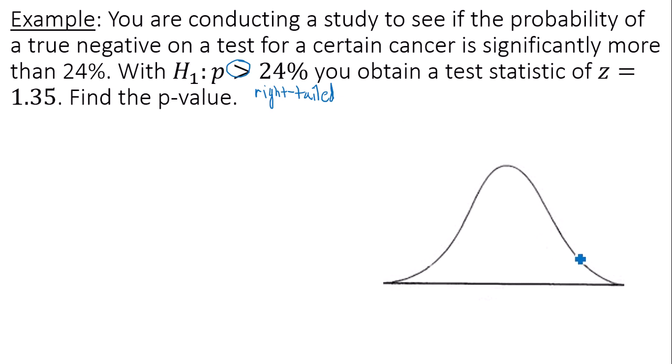So that means my p-value will be the area of this right-hand tail under my curve. So separating that p-value region from the rest of the graph is actually the test statistic, 1.35.